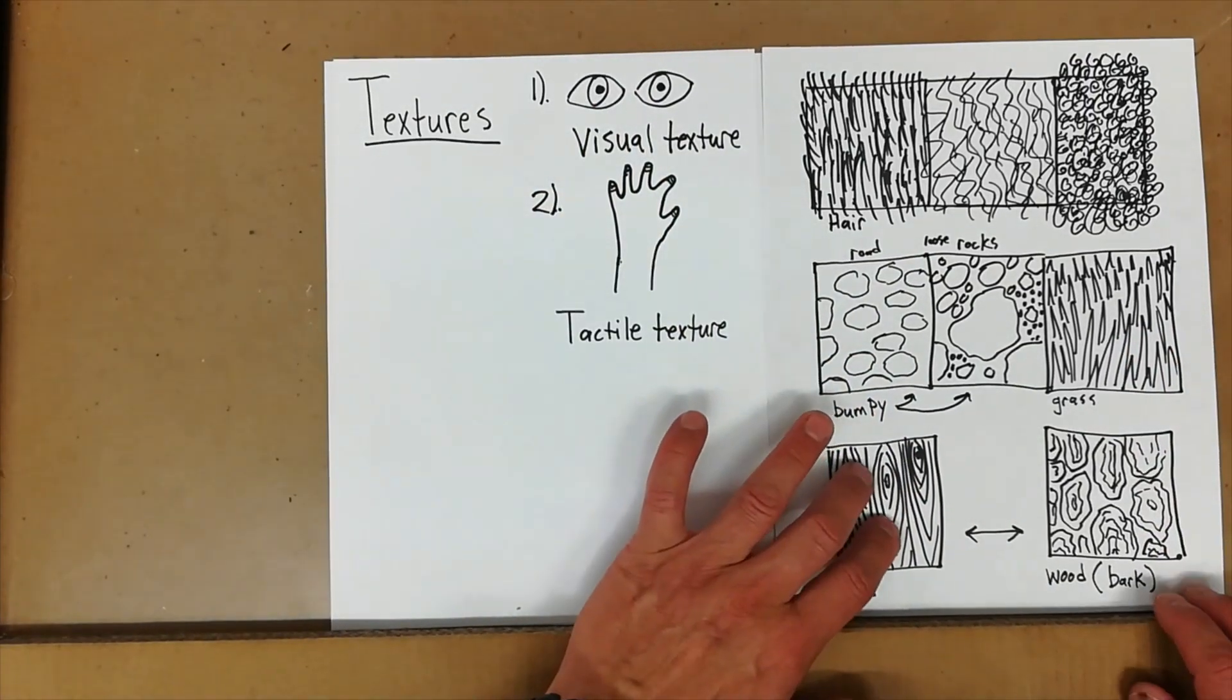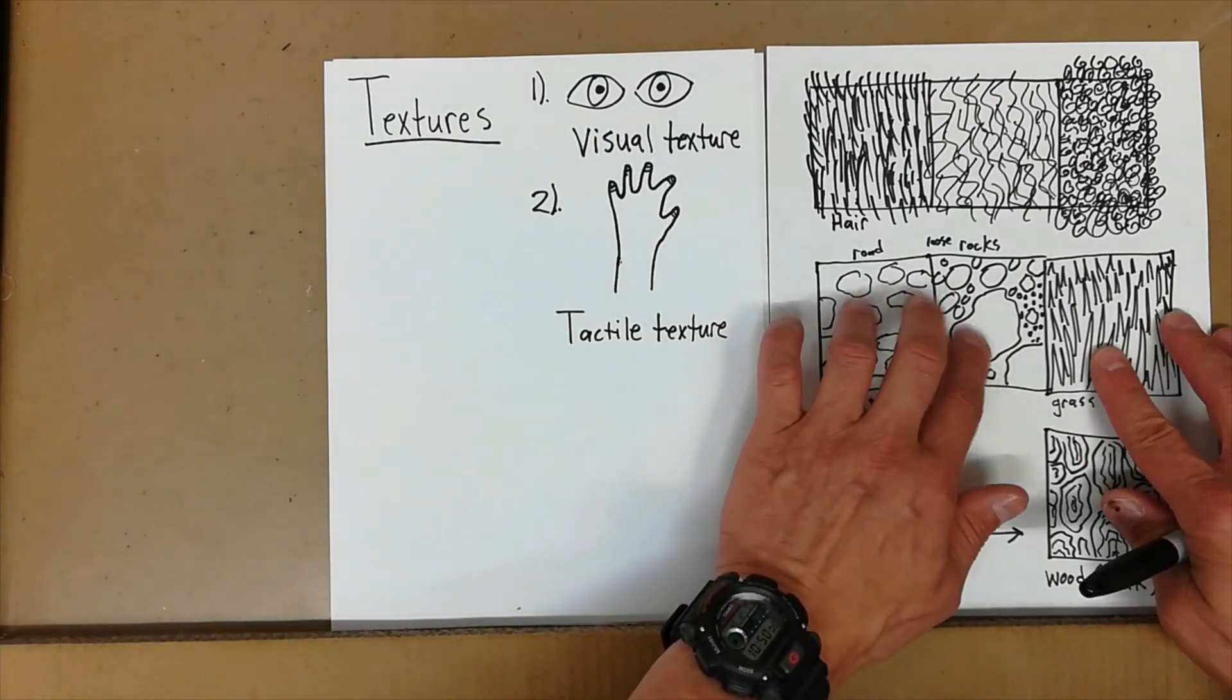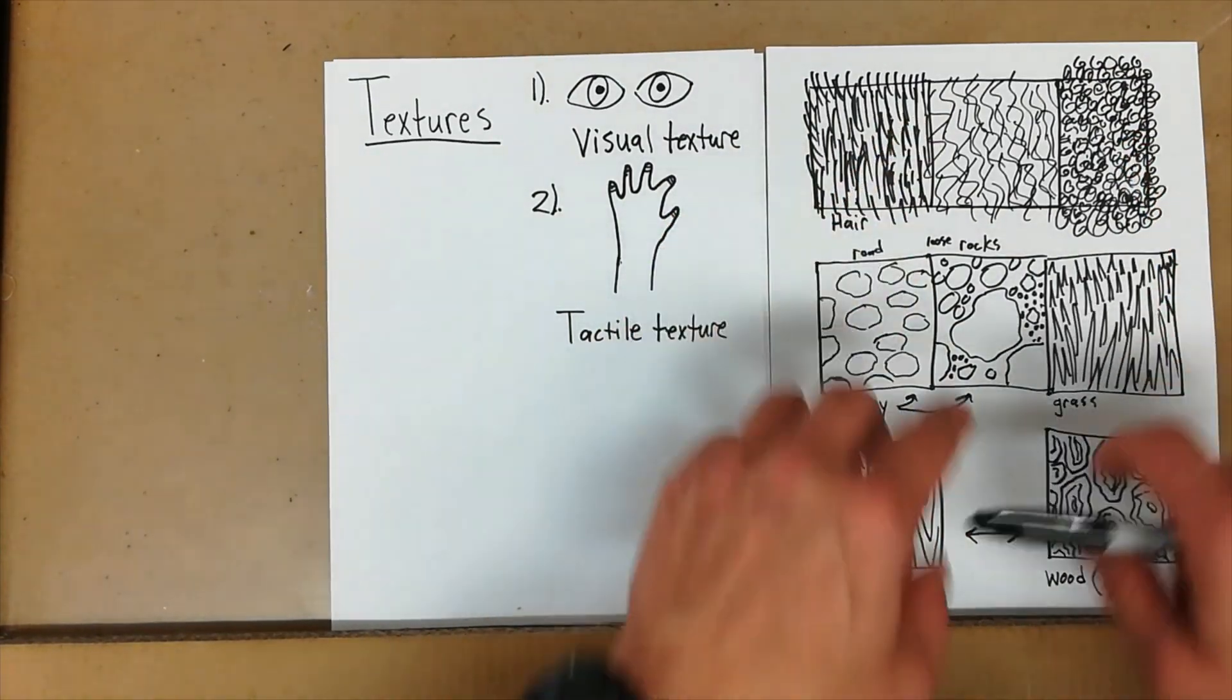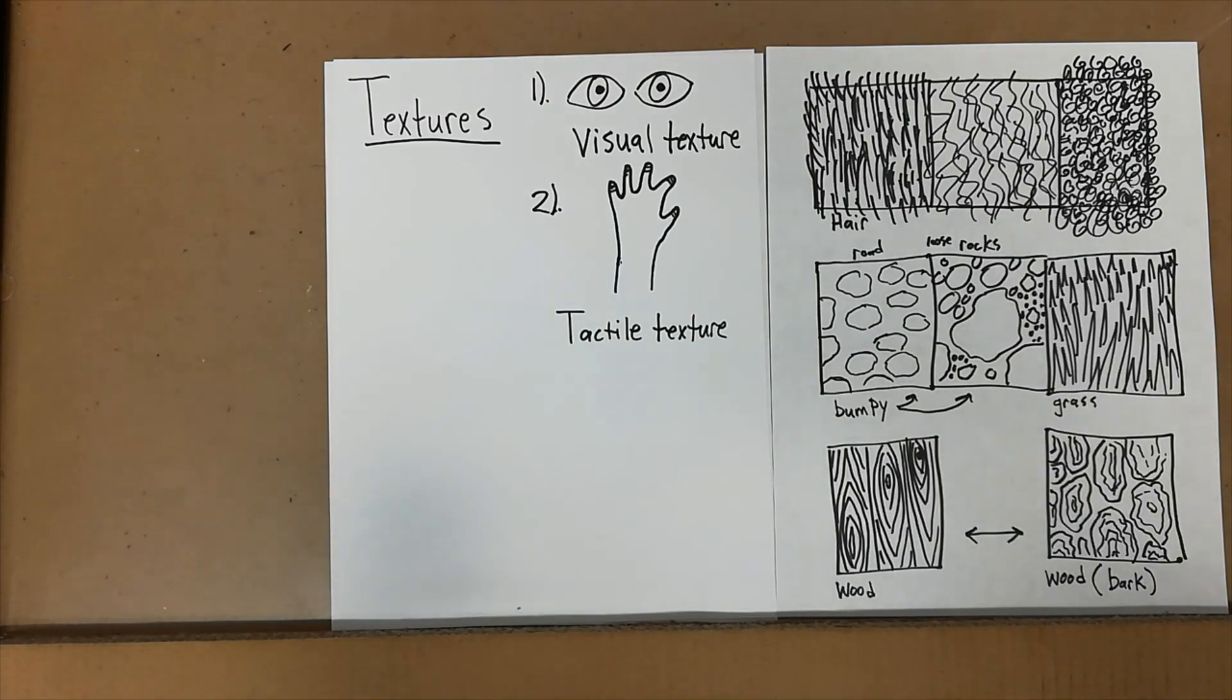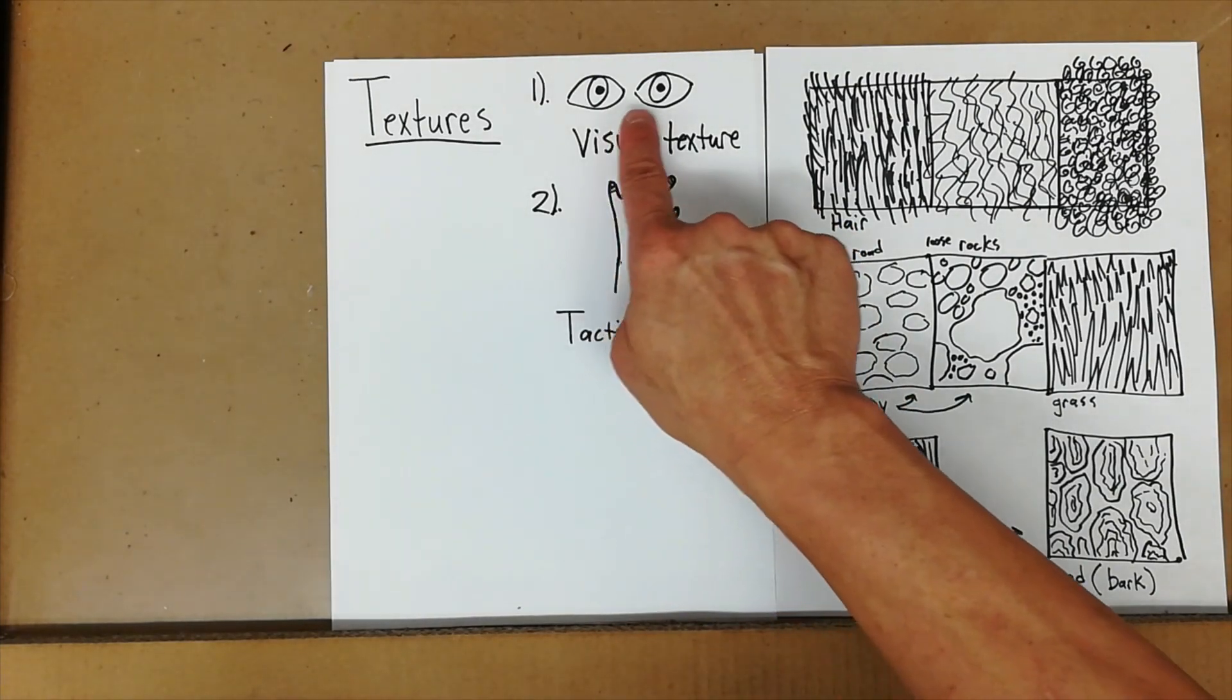Because when you touch this, it doesn't feel like wood or bark or grass or bumpy rocks or hair. Visual texture we can only see. Tactile texture would be the real object that we can touch, and it feels the way it looks. So remember, tactile touch, visual eyes.